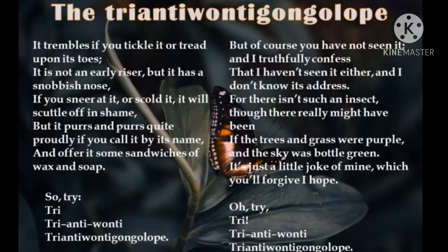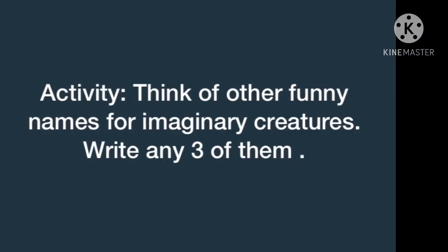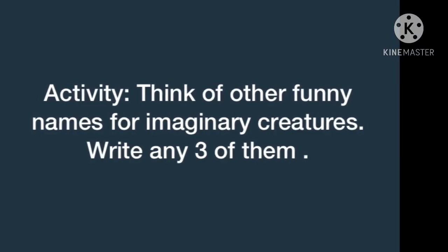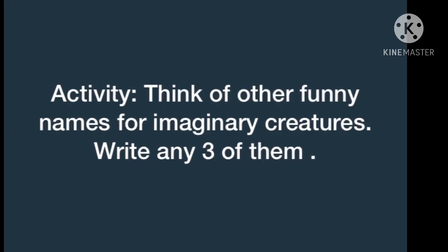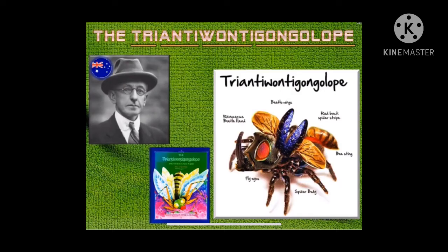So now the poet is telling again — try the name once again: Tri-Anti-Wanty-Gonglop. I hope you have understood the poem, students. Go through the poem once again, read it whole, and then complete the activity given in the group. Thank you.